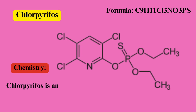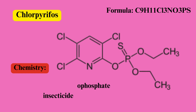Chlorpyrifos. Chemistry. Chlorpyrifos is an organophosphate insecticide with a chemical formula of C9H11Cl3NO3PS, known for its potent insecticidal properties.